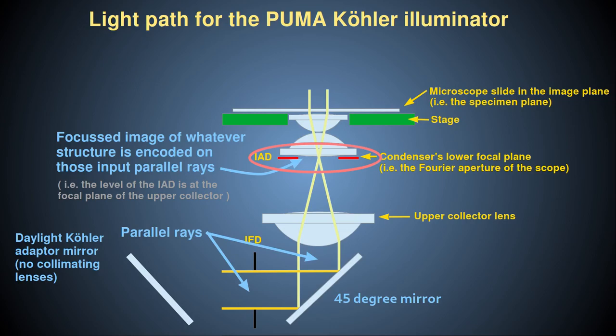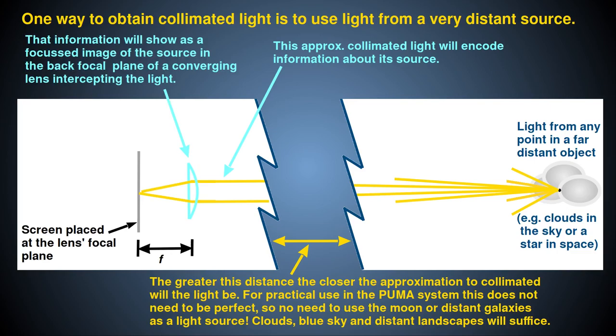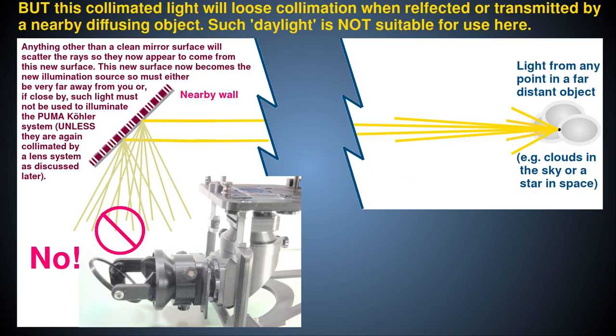So, in practice, when using daylight as the illumination source, this daylight must originate from a faraway source, like the clouds and the blue sky, or light reflecting off a distant landscape, in order for it to be approximately collimated. You can't just use ambient daylight reflecting from any close source, for example within a room reflecting off a white wall, a curtain, or some other close diffusing object.